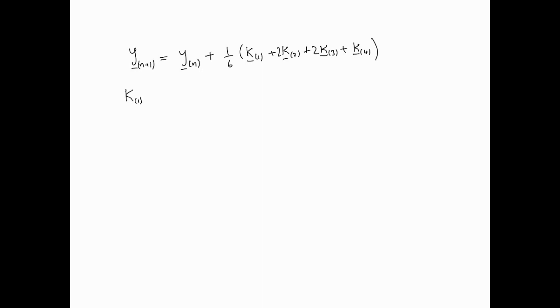Y dash is f dash, right? So f dash of x and the y vector. What that means is, what is your y dash in this case? Your y dash is y dash and z dash, and that's equal to your function f(x,y,z) and g(x,y,z). So that's the vector equivalent.